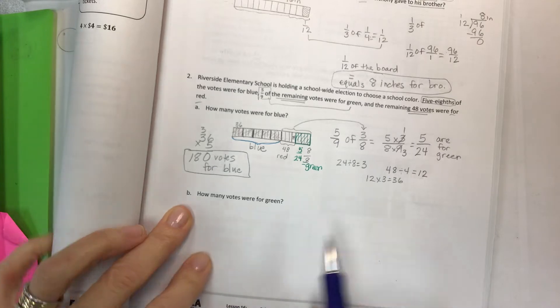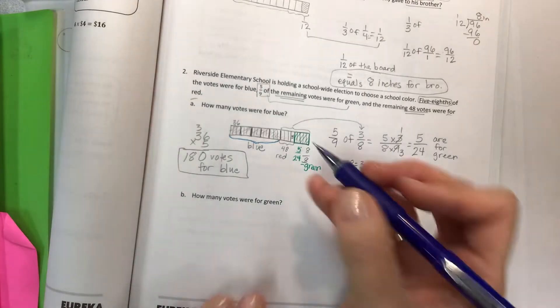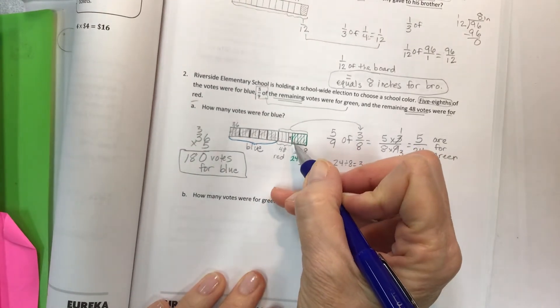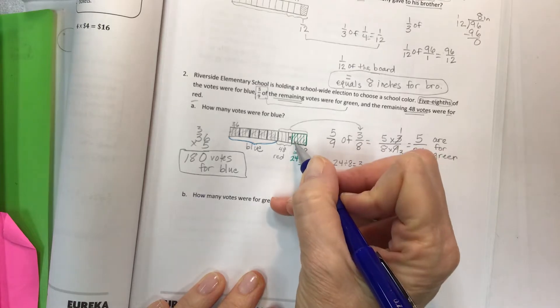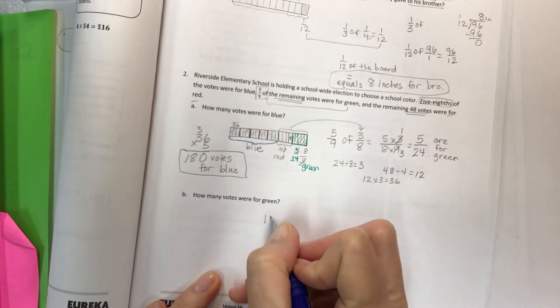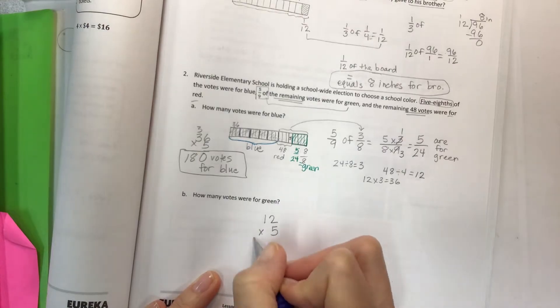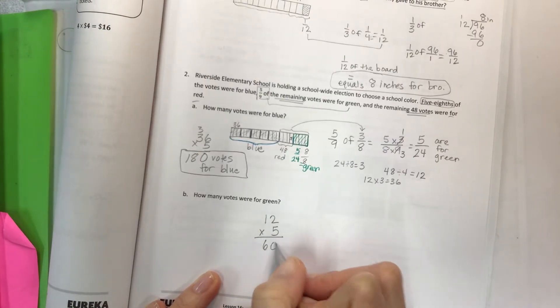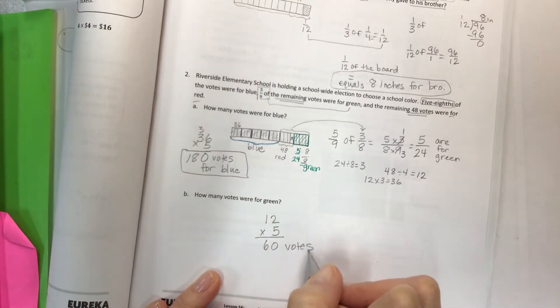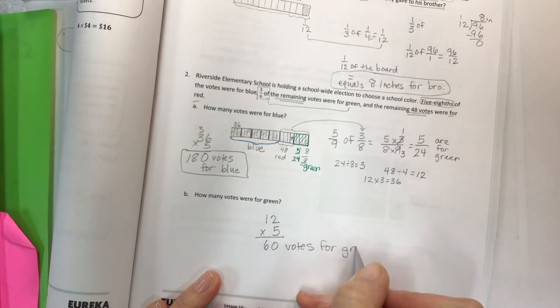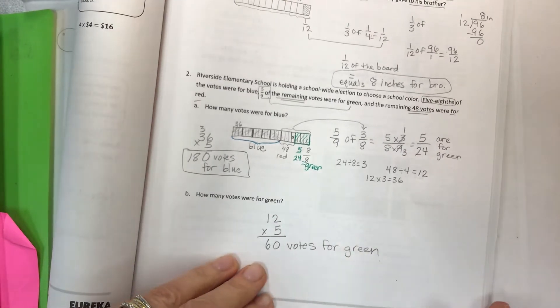So if I have, remember, it's three of the small ones. So every time I have three of the small ones, that's 12 times three, if you want to break it up like that. And then I have one, two, three, four, five of those. And then we end up with our 180 votes for blue. And again, you might not have seen it that way. This is just one way to get there.